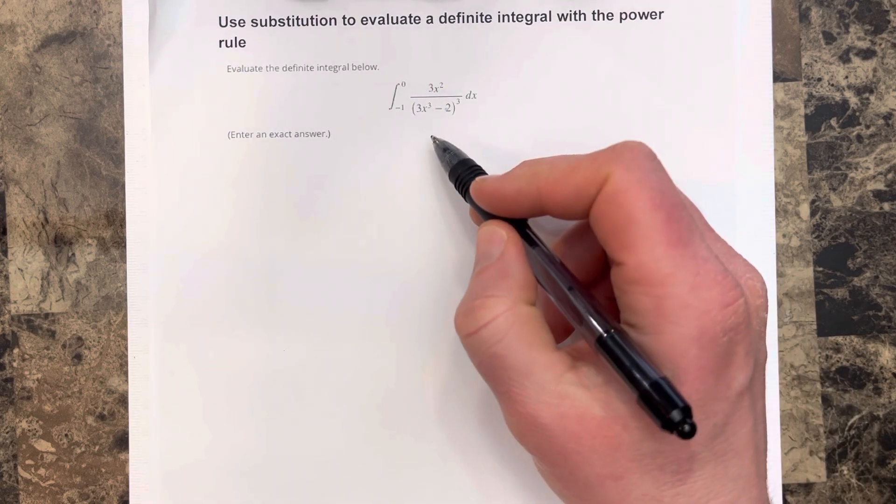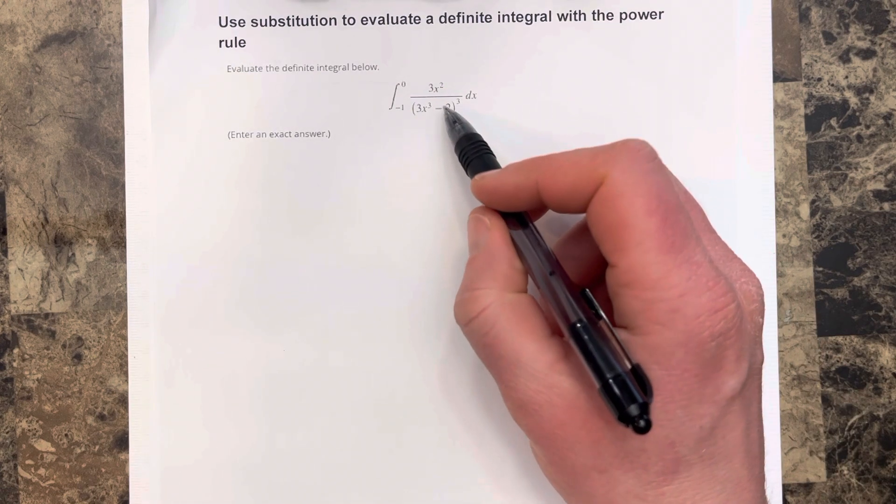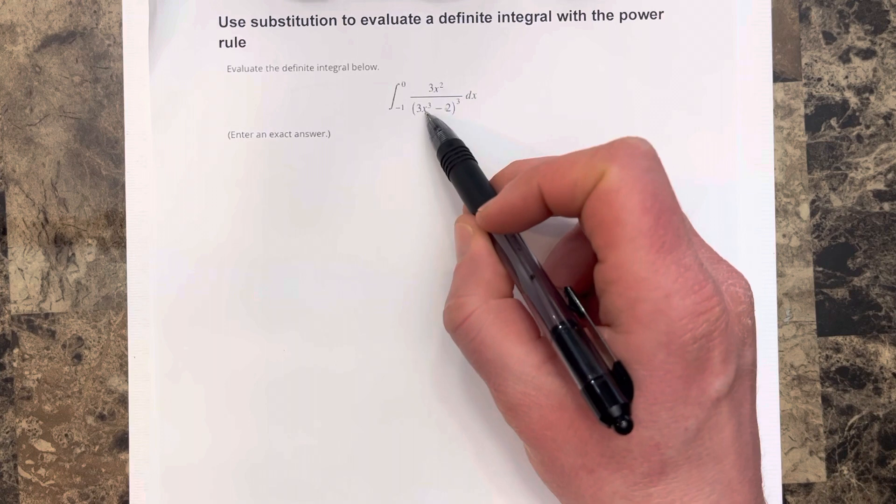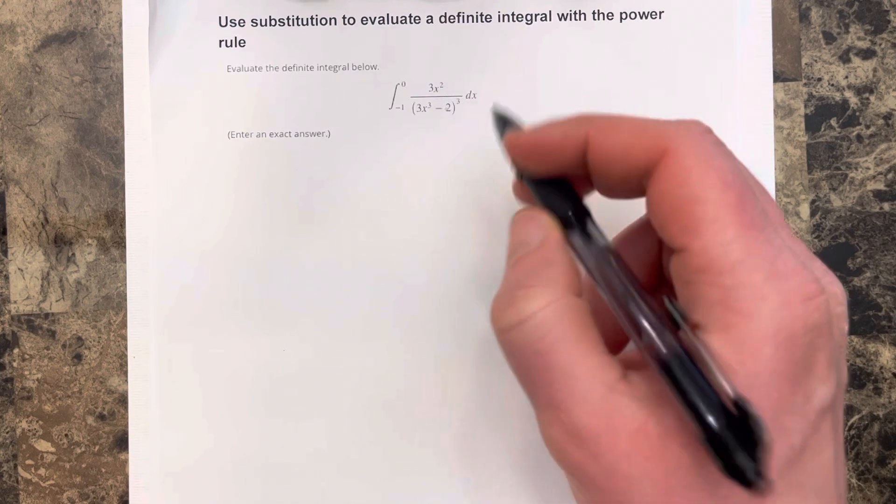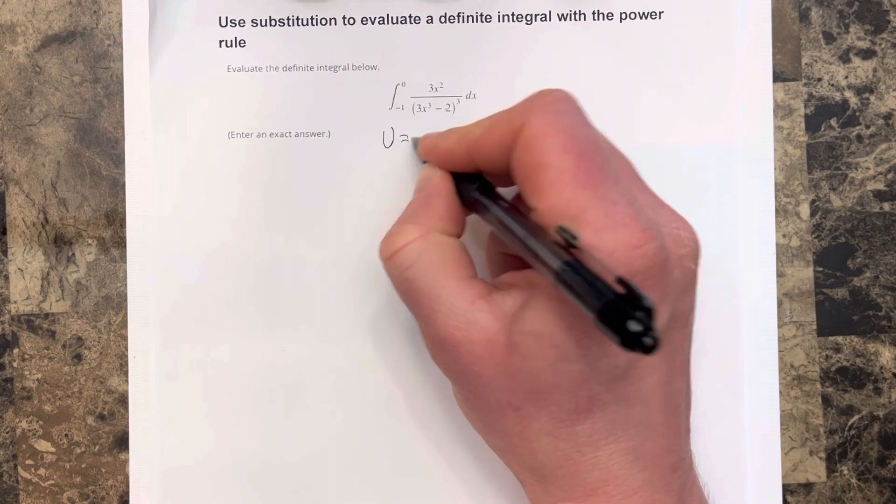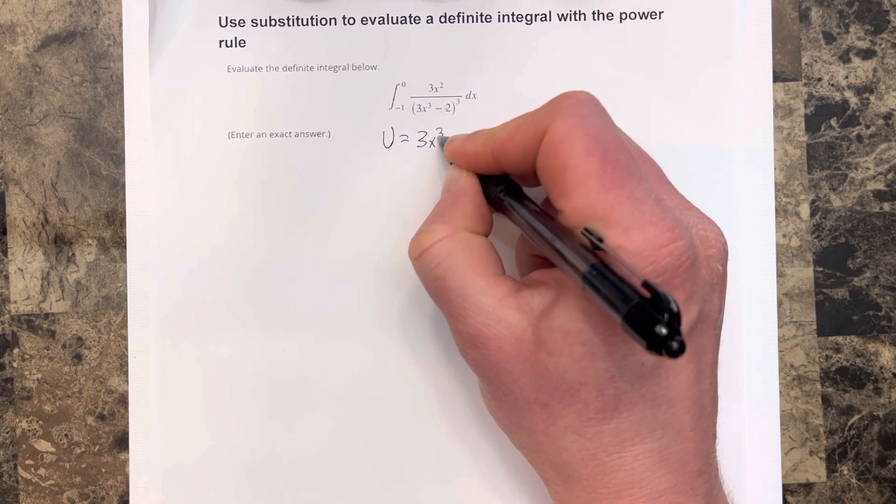Now we're going to have to figure out what u is, and I think that because this has a higher power, x cubed, than x squared, and it's the inside function for this cubic, that it makes sense that we say u is equal to 3x cubed minus 2.